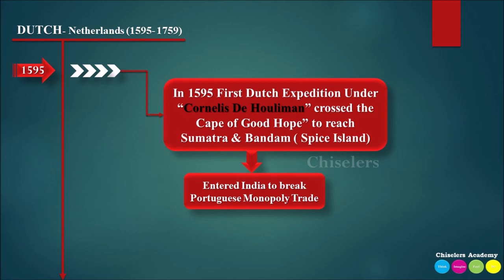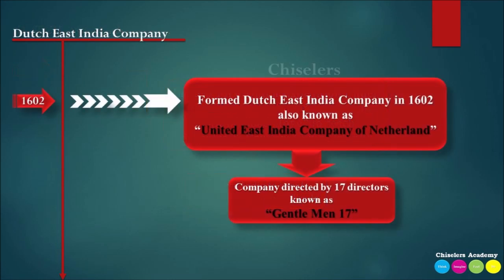While Portugal was conducting monopoly trade in India, the Dutch decided to break that monopoly. The Dutch established the second major European company in India — the Dutch East India Company, whose full name is the United East India Company of Netherlands.